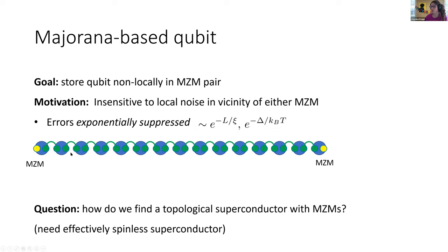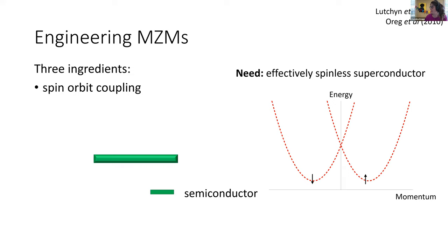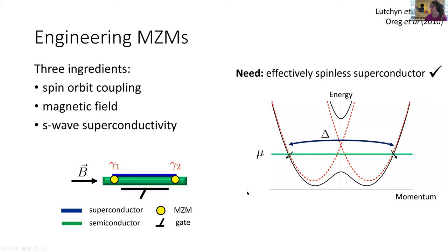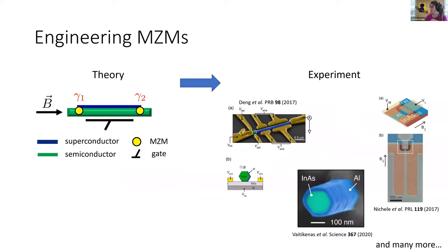We're running low on time, so I'll jump ahead. The next slides cover how we go from this toy model of a Majorana zero mode nanowire to actually building it out of real materials. The idea is to combine different ingredients — a superconductor, a semiconductor, a gate for voltage tuning, and a magnetic field — in a way that gives the same phase properties as the toy model, based on known properties of each material's energy-momentum dispersion.